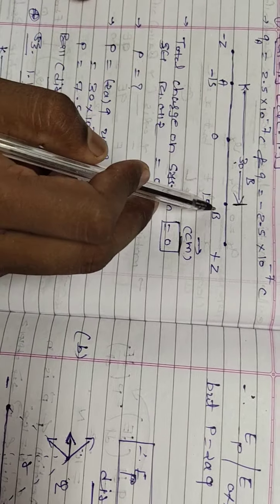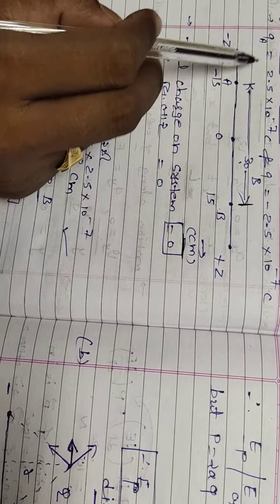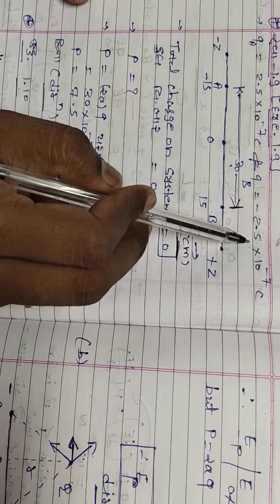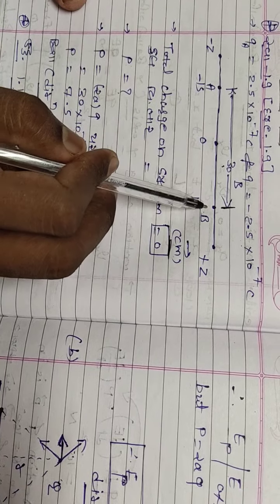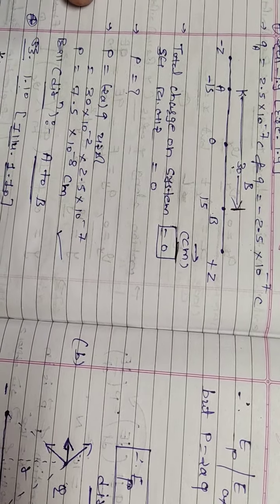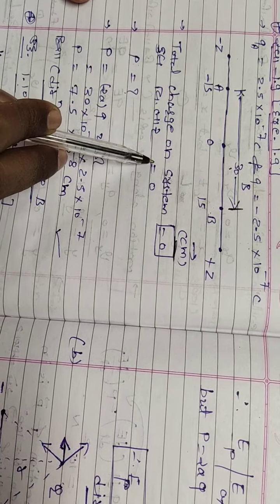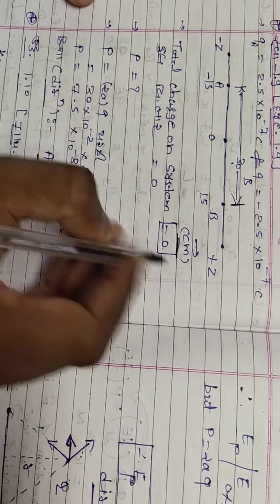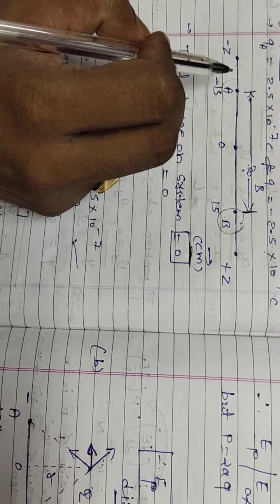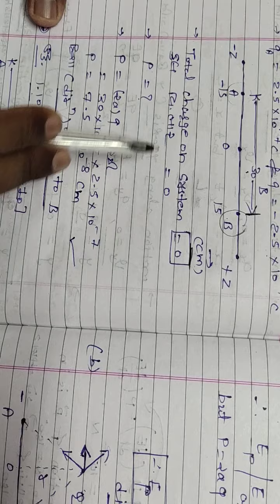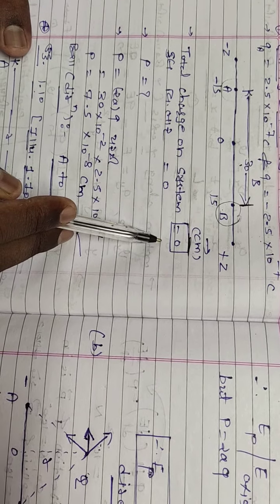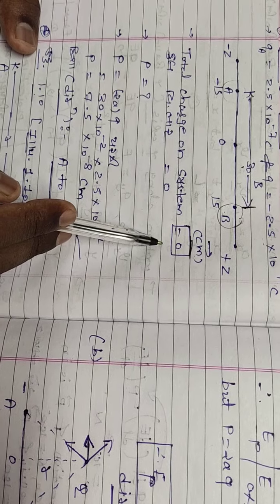Now, charge on point A and charge on point B are given. Both have the same magnitude but opposite directions. This is a dipole system. First question: calculate the total charge on the system. We know one is positively charged and another is negatively charged, so the total answer is zero. Plus q and minus q nullify the effect of each other.